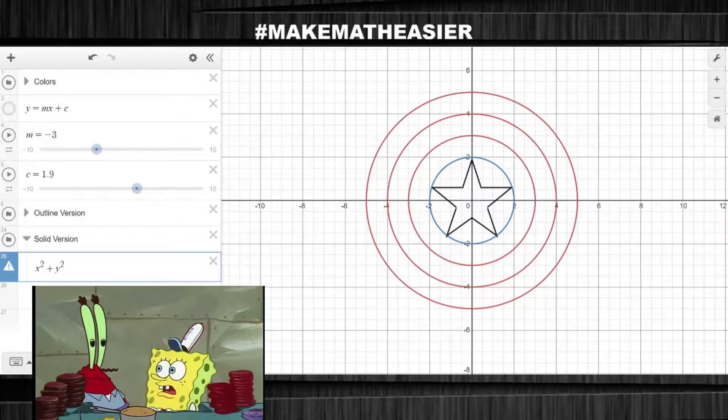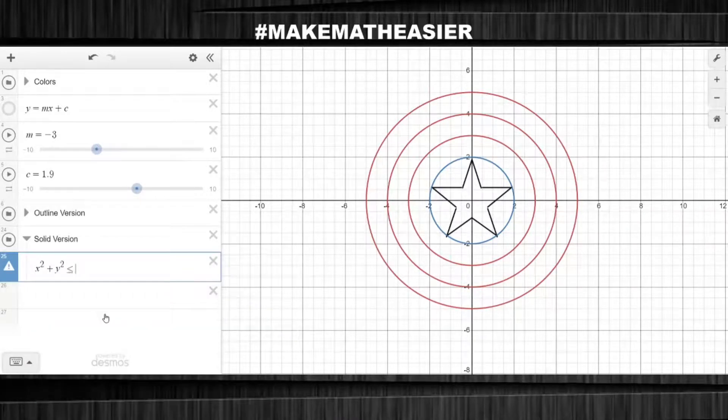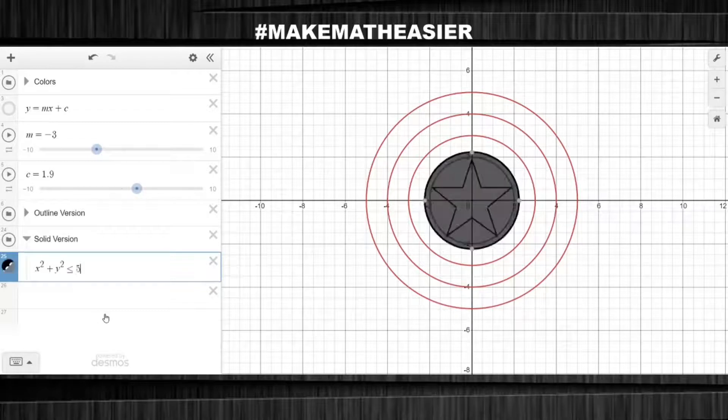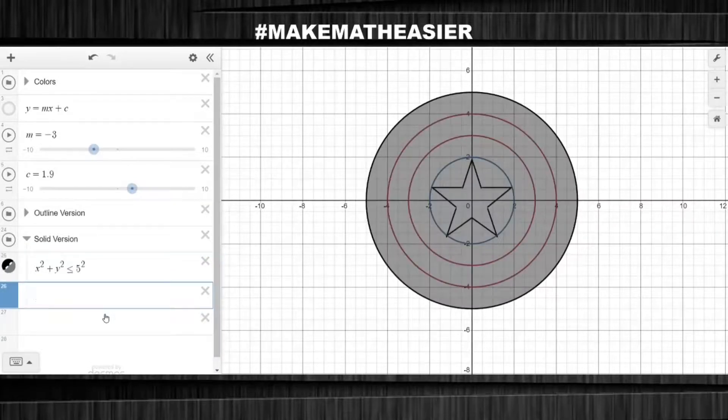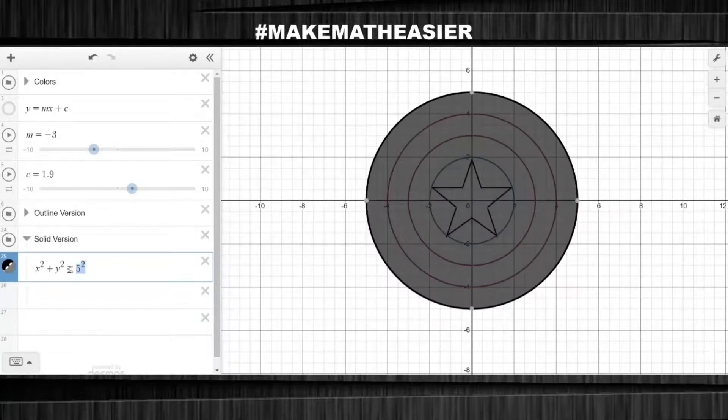I'm starting off with the R size five circle. And notice how I'm using a less than or equal to symbol instead of the usual equal sign like last time. This is because that symbol essentially allows me to color inside the circle. Now, let's do the R size four circle.